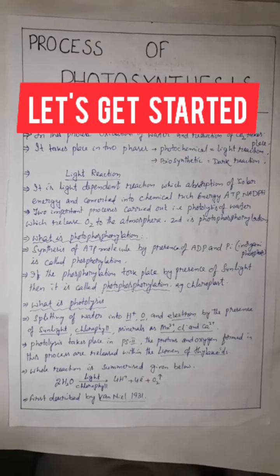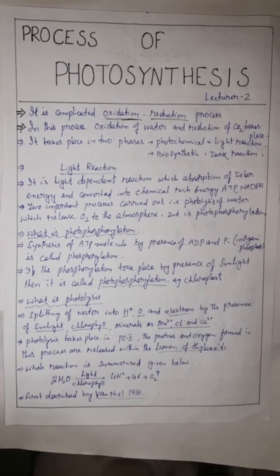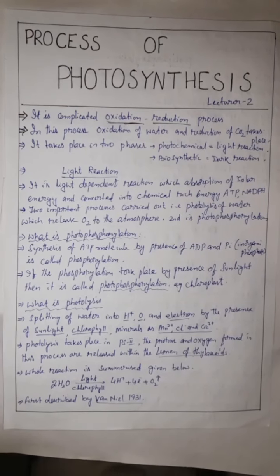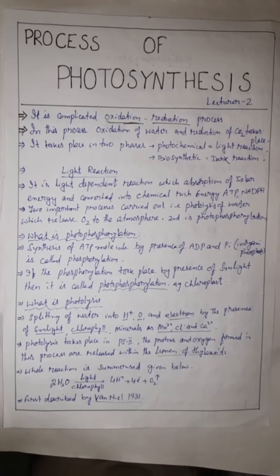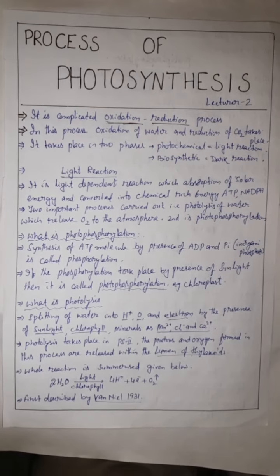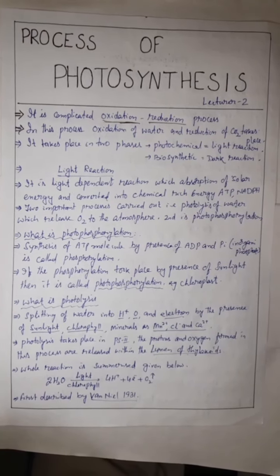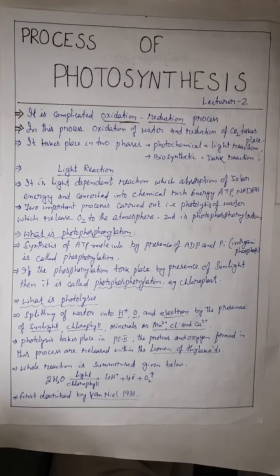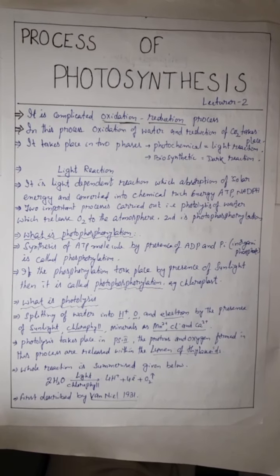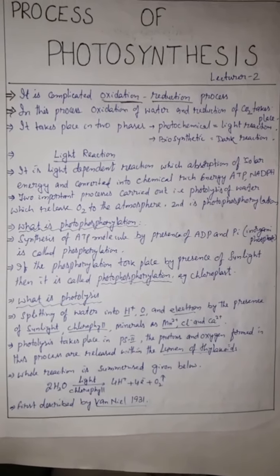So let us get started today. We will discuss about the process of photosynthesis. It is a complicated oxidation and reduction process in which oxidation of water and reduction of carbon dioxide takes place. It occurs in two phases: photochemical, that is called light reaction, and biosynthetic reaction, that is called dark reaction.